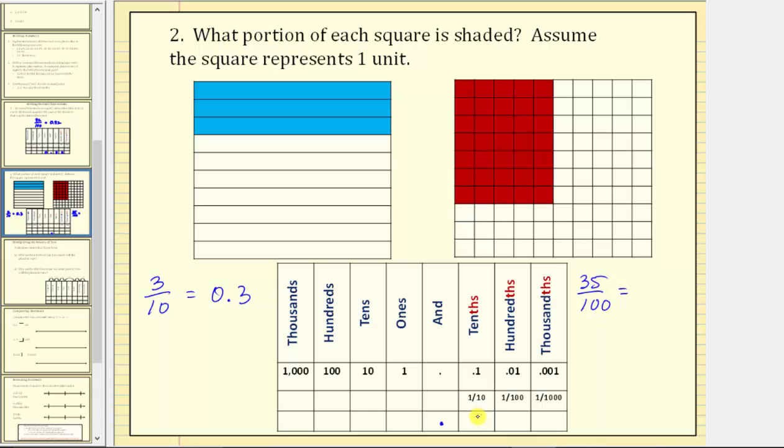we need a 35 to the right of the decimal point where the three is in the tenths place value and the five is in the hundredths place value.